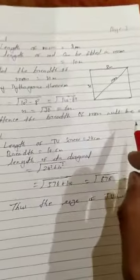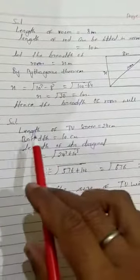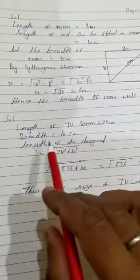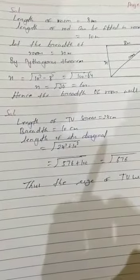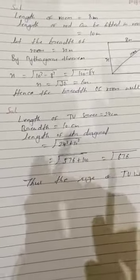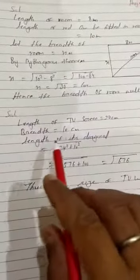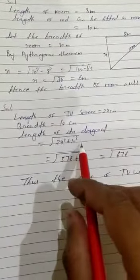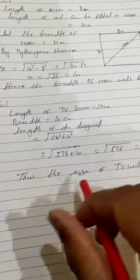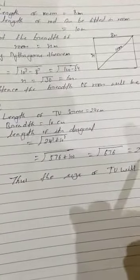Question number six involves a TV screen. Its length is 80 cm and width is 40 cm. We need to find the length of its diagonal. The diagonal equals under root of 24 squared plus 10 squared, which equals 576 plus 100, which equals 676. Taking the square root gives 26 cm. So the length of the TV screen's diagonal is 26 cm.